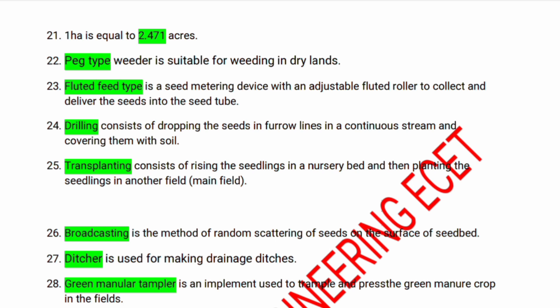Drilling consists of dropping seeds in furrow lines in a continuous stream and covering them with soil. Transplanting consists of raising seedlings in a nursery bed and then planting them in another field or main field. Broadcasting is the method of random scattering of seeds on the surface of the seedbed. A ditcher is used for making drainage ditches.